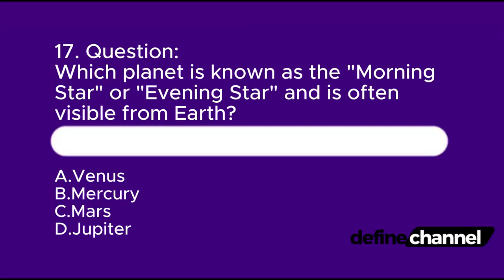Question 17. Which planet is known as the morning star or evening star and is often visible from Earth? A. Venus. B. Mercury. C. Mars. D. Jupiter. Which is the correct answer?